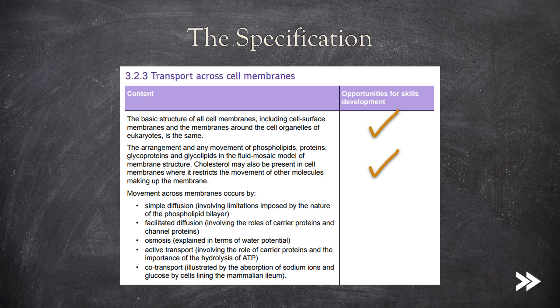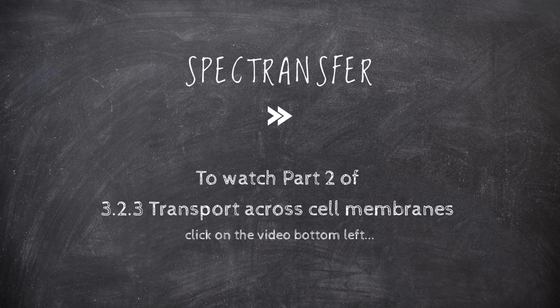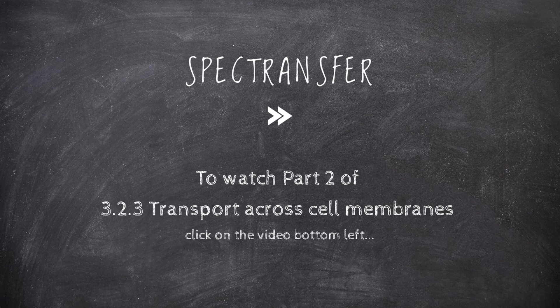Great, so that would be simple and facilitated diffusion. And that's the end to part one of transport across cell membranes. To find out about osmosis, active transport, co-transport, and adaptations of membranes, just follow the link at the end of this video.